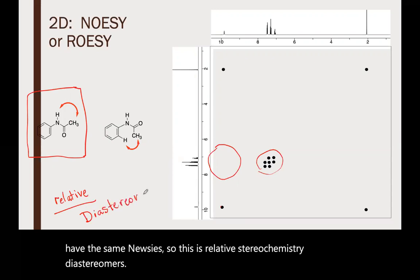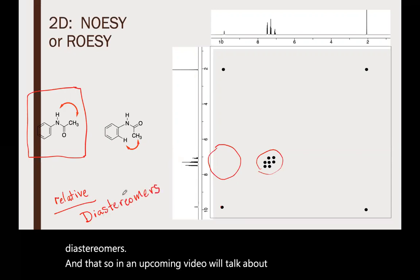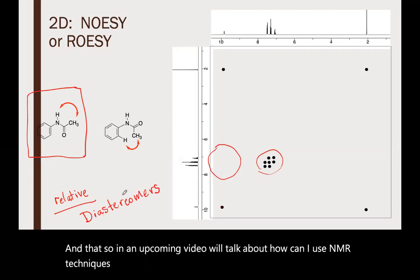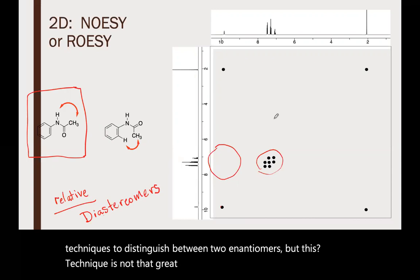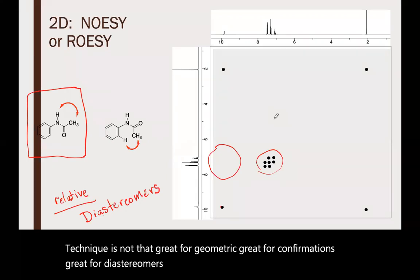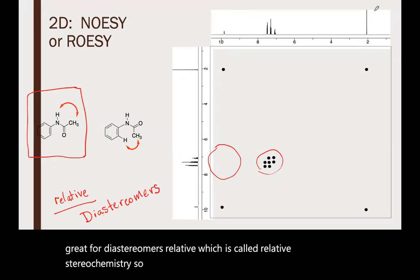In an upcoming video we'll talk about how to use NMR techniques to distinguish between two enantiomers, but this technique is not that. It's great for geometric isomers, great for conformations, great for diastereomers, which is called relative stereochemistry. So another tool to help you figure out information about molecules.